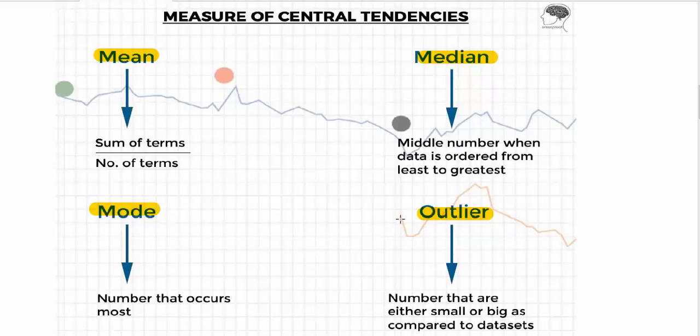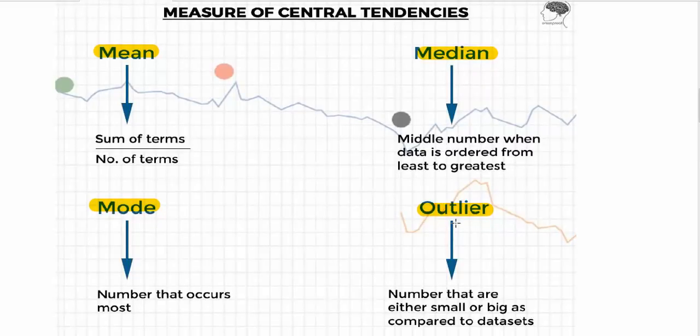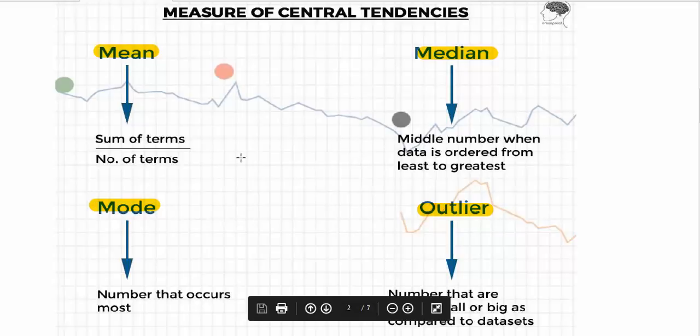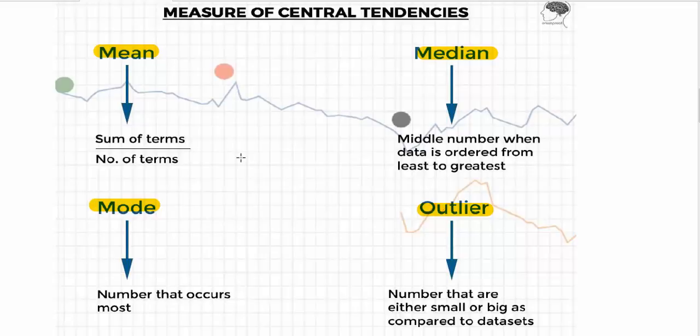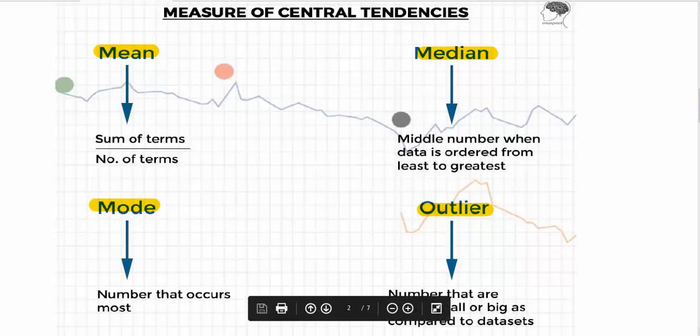Now comes a very important term: outlier. Outliers are the numbers that are either small or big as compared to other terms in the dataset. We will understand this in the third slide. In this slide, as a keynote, I'd like to mention that the measure of central tendency includes mean, median, and mode, and outlier has a deep impact on that, which we are going to see in the next slide.